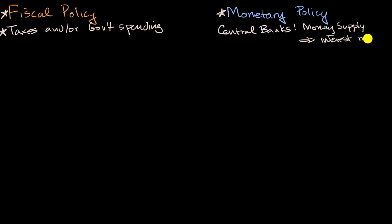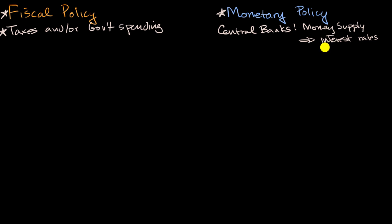Now, why would this matter if we're thinking about engineering where we are relative to full employment output? Well, with low interest rates, borrowing is cheaper, so people might be willing to borrow and spend more, or corporations might be willing to borrow and invest more. On the other hand, if you had higher interest rates, it would go the other way. Either way, you have an impact on aggregate demand.